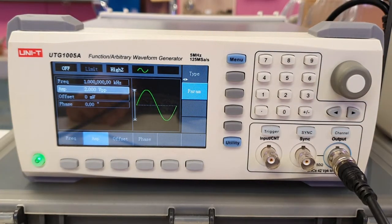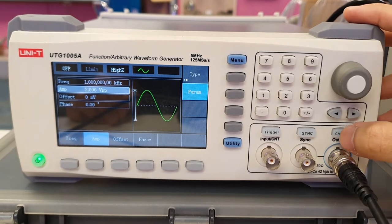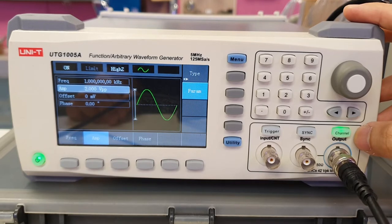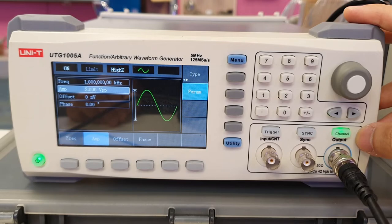After entering the parameters, you need to press the Channel Output button to enable the output of function generator. The green light will be on when the output is enabled.